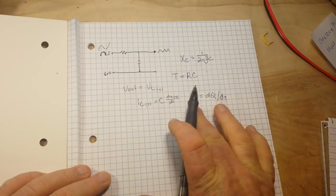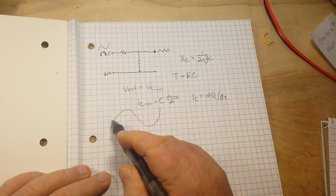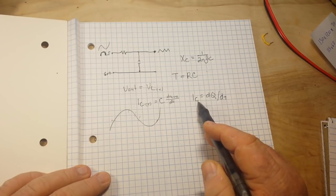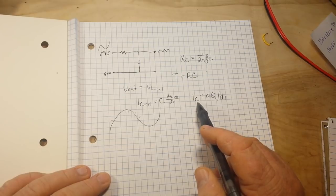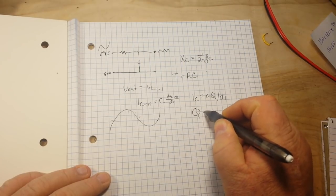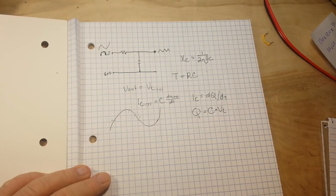So this is anywhere, you know, here's our sine wave. Anywhere along this point, one of these points, we can find the instantaneous charge. And the instantaneous charge, q, is equal to the capacitance, times the voltage of the capacitor.